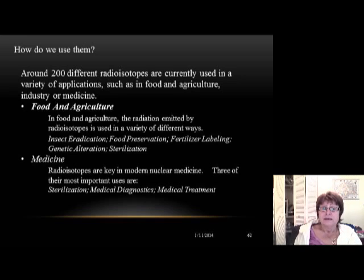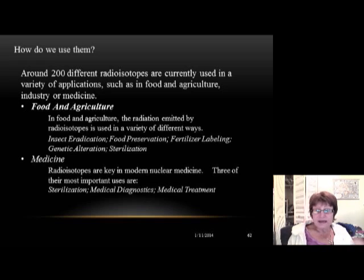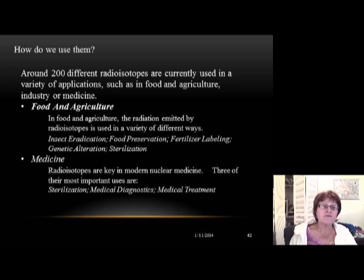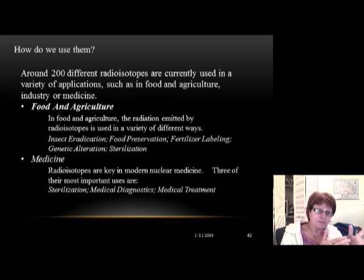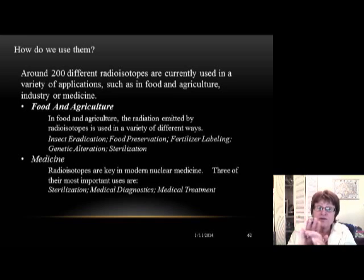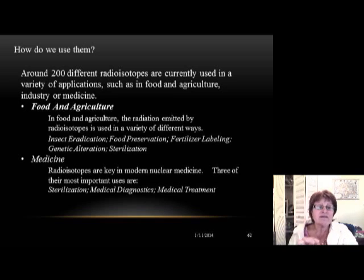We use radioactive isotopes in medicine not only to destroy thyroids but also to kill cancer cells, for sterilization, and most of all for medical diagnosis. Beta particle emitters are especially used for cancer treatment because the beta particle penetrates only about one inch into the body, going right into the cancer cells without spreading further — which is critical since radiation kills healthy cells too.